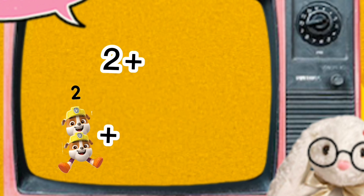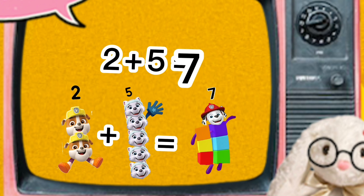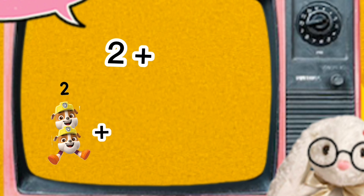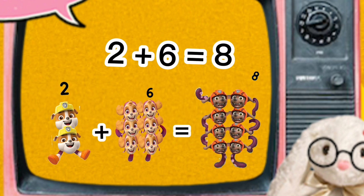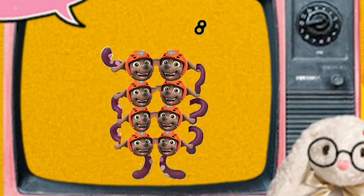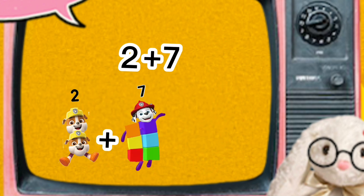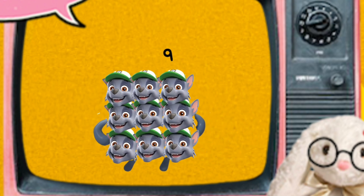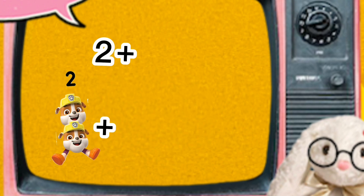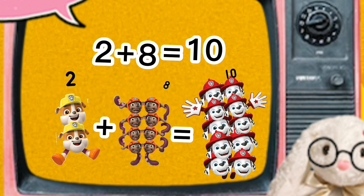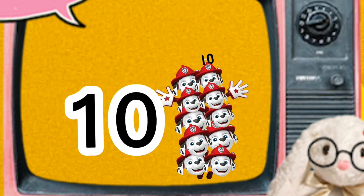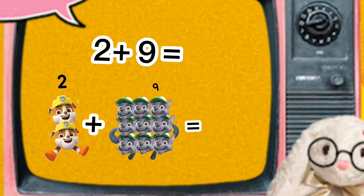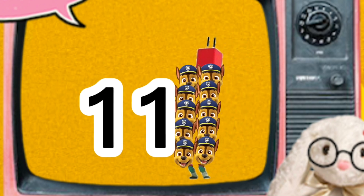2 plus 5 equals 7, I am 7. 2 plus 6 equals 8, I am 8. 2 plus 7 equals 9, I am 9. 2 plus 8 equals 10, I am 10. 2 plus 9 equals 11, I am 11.